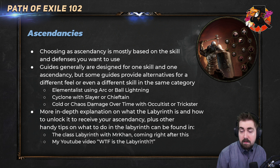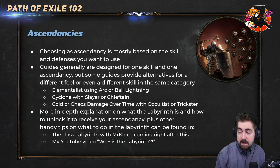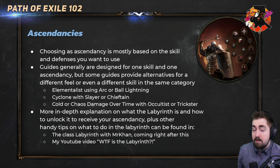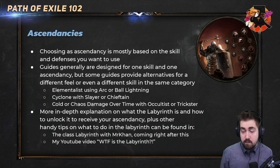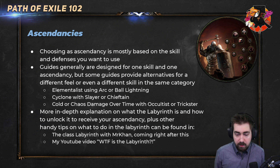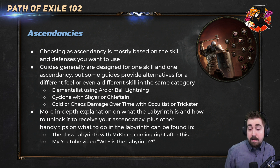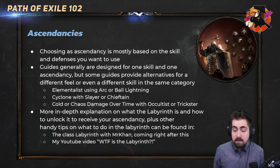For example, Cyclone can be Slayer or Chieftain, and cold or chaos damage over time with Occultist and Trickster. Sometimes it's very easy to swap between them. Regretting ascendancy points costs 5 regrets per point. More in-depth explanation of what Labyrinth is and how to unlock it — plus handy tips on what to do in Labyrinth — can be found in the class Labyrinth episode coming after this. They made the lab so much better in the last patch — 3.14 Kev's Kiss. It's actually fun to farm now.